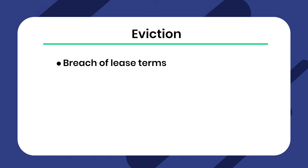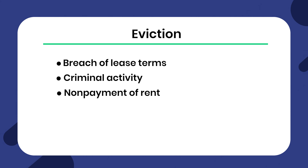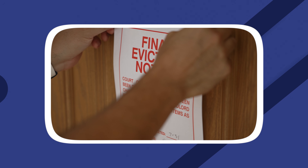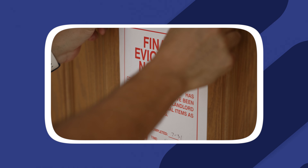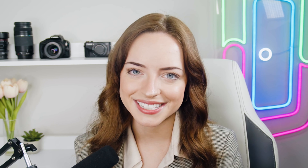A landlord may evict a tenant for the following reasons: breach of lease terms, criminal activity, or non-payment of rent. According to Texas landlord-tenant laws, the landlord must send a three-day eviction notice before the tenant vacates. If a landlord wants to evict a tenant, make sure they follow all the laws for eviction and lease terminations in Texas.